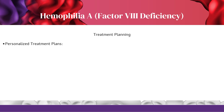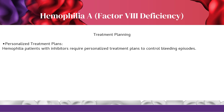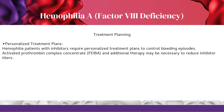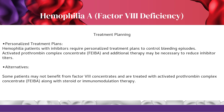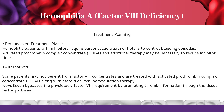Hemophilia patients with inhibitors require personalized treatment plans to control bleeding episodes. Activated prothrombin complex concentrate (FEBA) and additional therapy may be necessary to reduce inhibitor titers. Some patients are treated with activated prothrombin complex concentrate (FEBA) along with steroid or immunomodulation therapy. NovoSeven bypasses the physiologic factor 8 requirement by promoting thrombin formation through the tissue factor pathway.